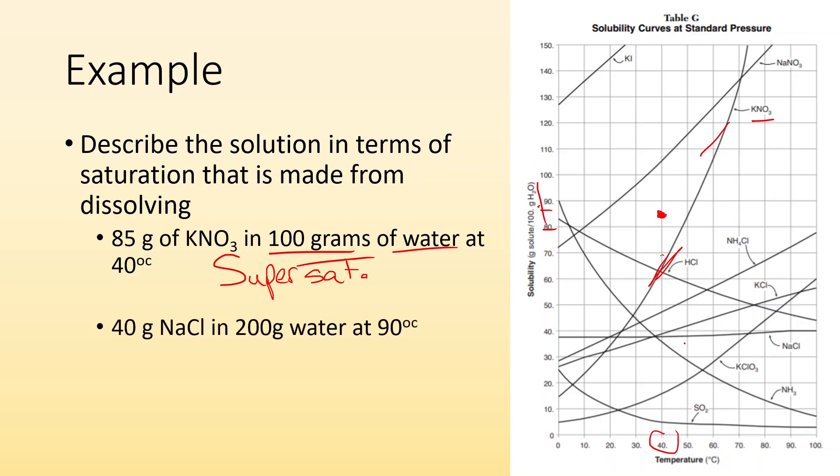All right. What if I had 40 grams of NaCl and 200 grams of water at 90 degrees Celsius? Well, I need to account for the fact that I have 40 grams of my solute in 200 grams of water. I want to know, how many grams would that be if instead I used a hundred grams?